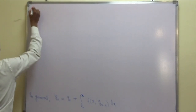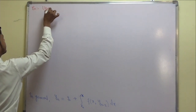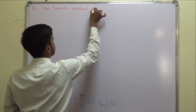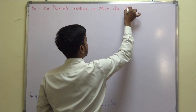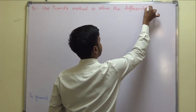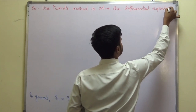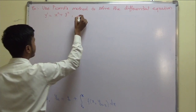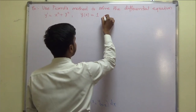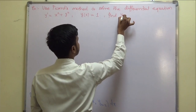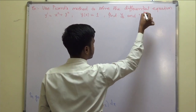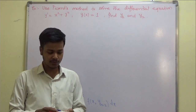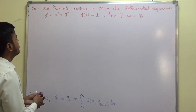Use Picard's method to solve the differential equation y' = x² + y², with initial condition y(0) = 1. Find y₁ and y₂. Sometimes you need to find y₁ and y₂ at specific points like 0.1 or 0.2. Now let us start the solution.